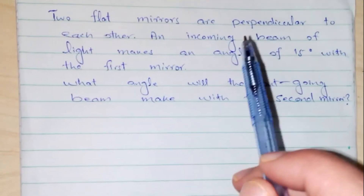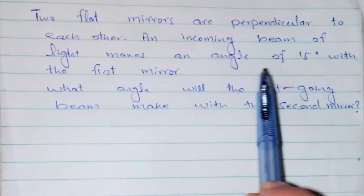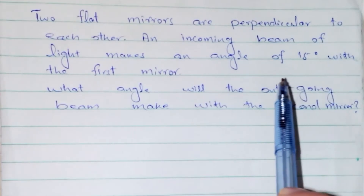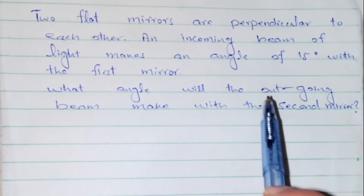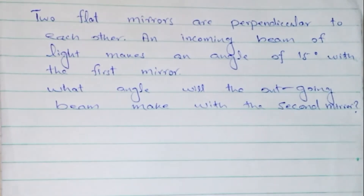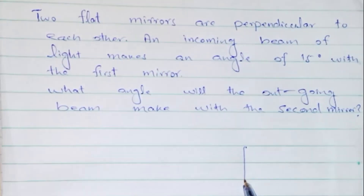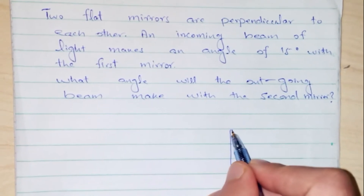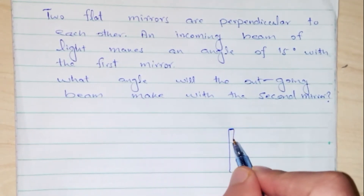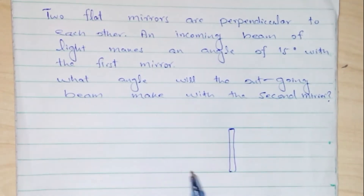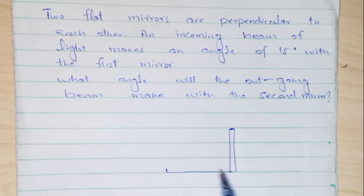Hello everyone. Today we are going to solve this numerical, which frequently appears in different examination papers. This numerical is based on the reflection of light from two flat mirrors. This is a purely geometrical question. Let's consider this is mirror one and this is mirror two.